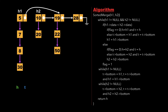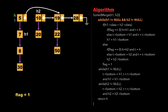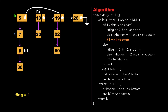In sorted_merge, we create two pointers h (head) and t (temporary), plus an integer flag initialized to 0. We check if both h1 and h2 are not null — since true, we check if h1's data is less than h2's data. Since 5 is less than 10, we update h and t to point to node 5, then update h1 to h1's bottom, so h1 now points to node 7, and set flag to 1.